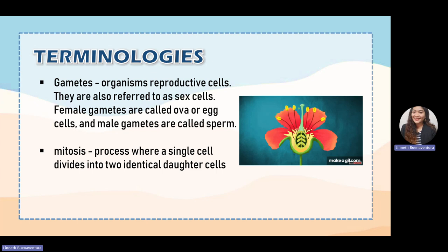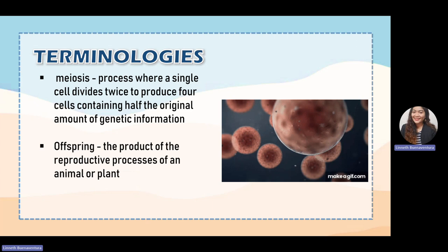Mitosis is a process wherein a single cell divides into identical daughter cells. It is a type of cell division that produces two identical daughter cells for our body cells. Next is meiosis — meiosis is a process of producing four daughter cells, and those four daughter cells have unique genetic information. We have meiosis one and meiosis two, which we discussed previously in General Biology.